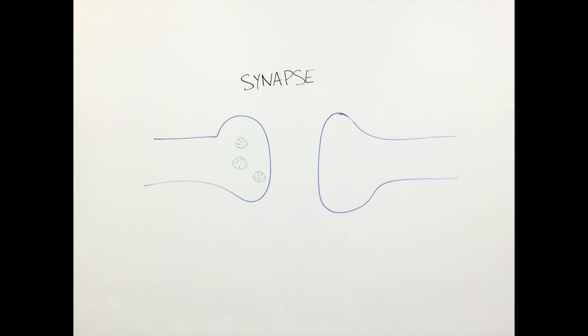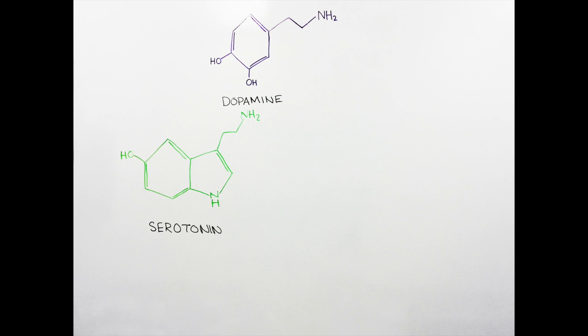This allows the next neuron in the pathway to receive the signal and react by passing the signal on through a pathway of neurons to its destination. Three examples of neurotransmitters involved in meth use are dopamine, serotonin, and norepinephrine.